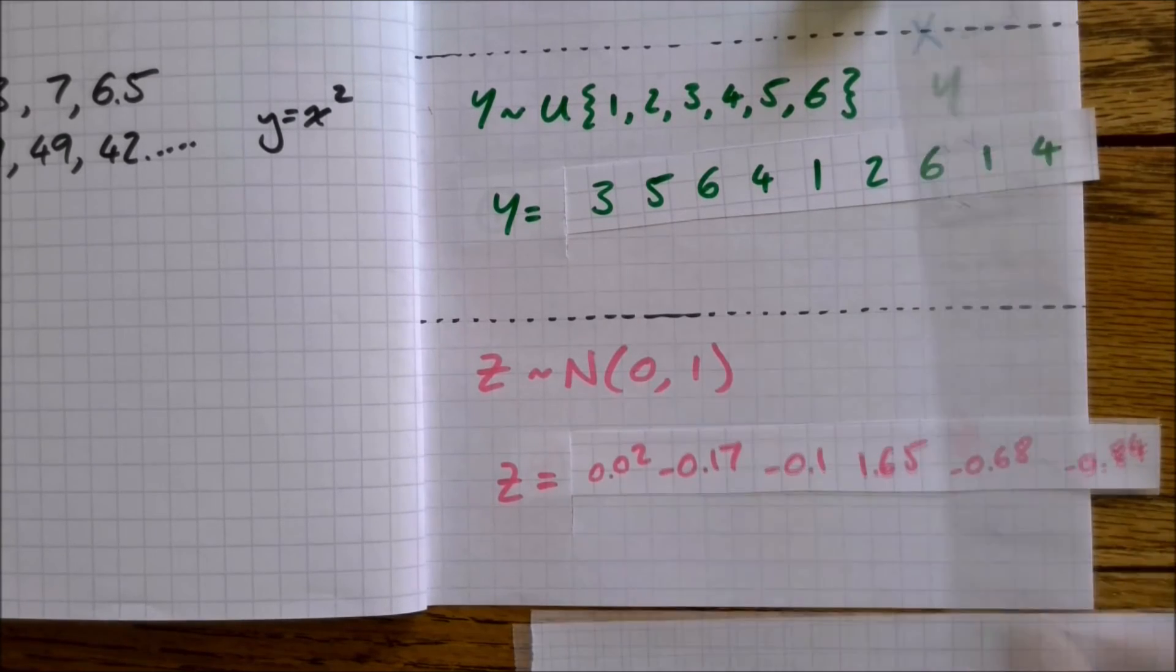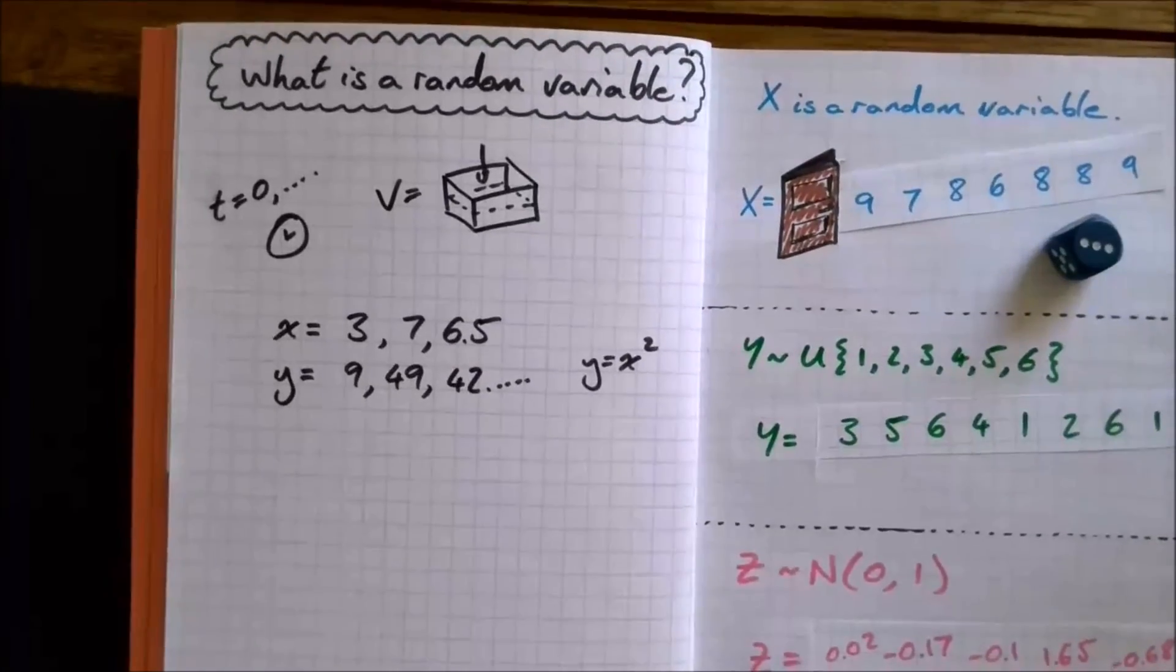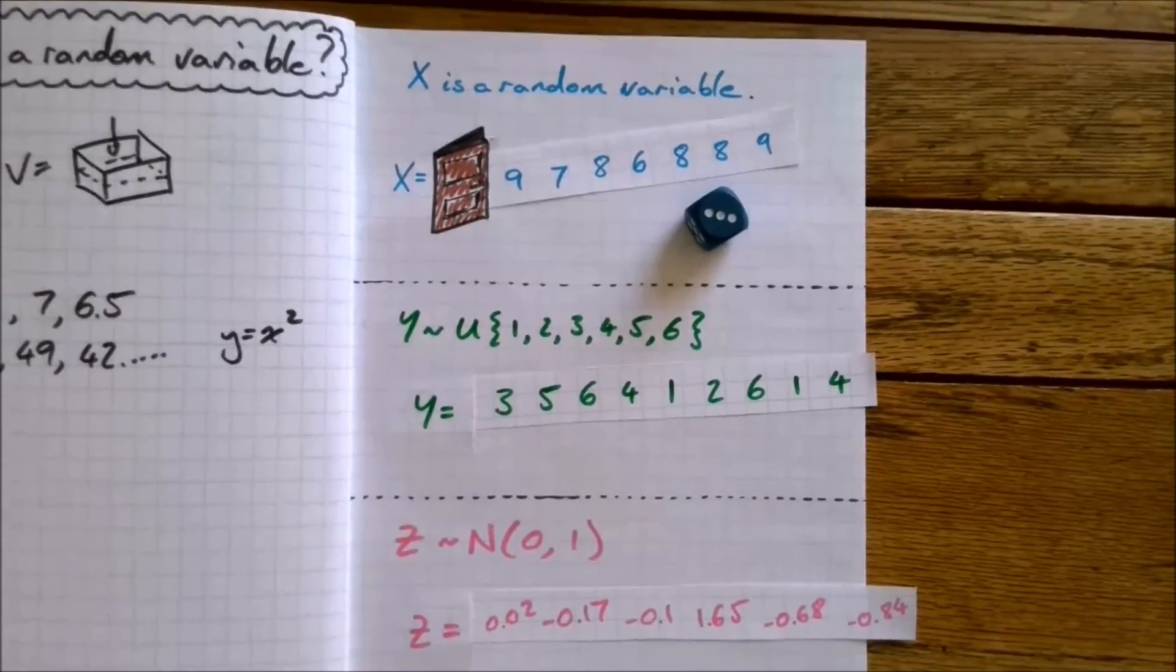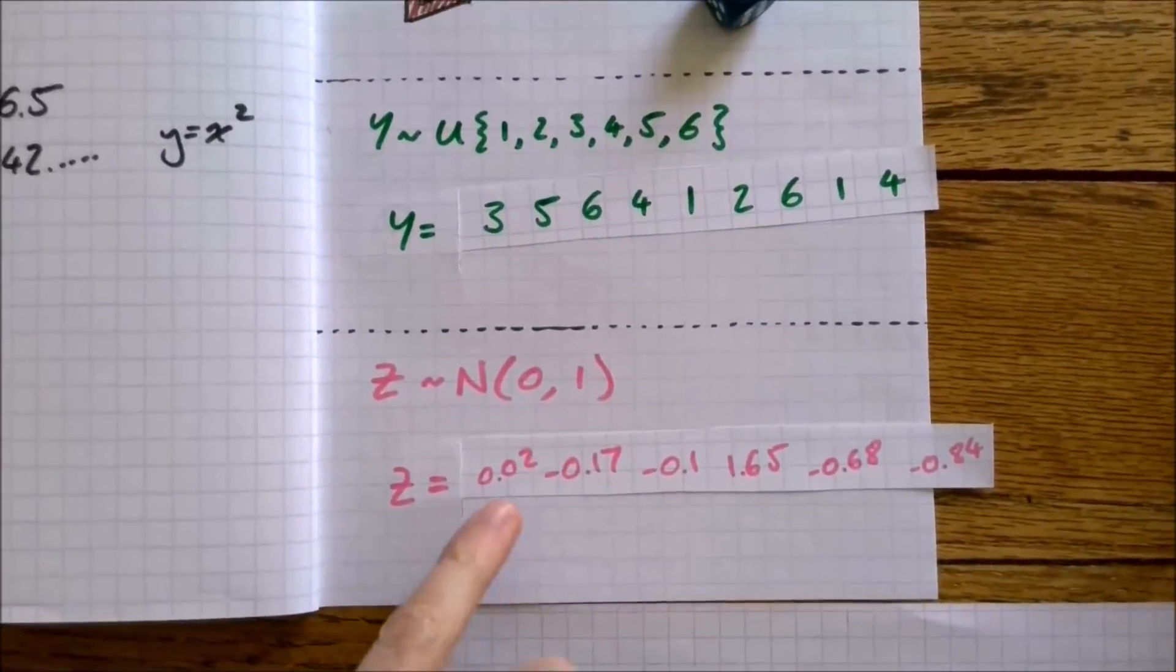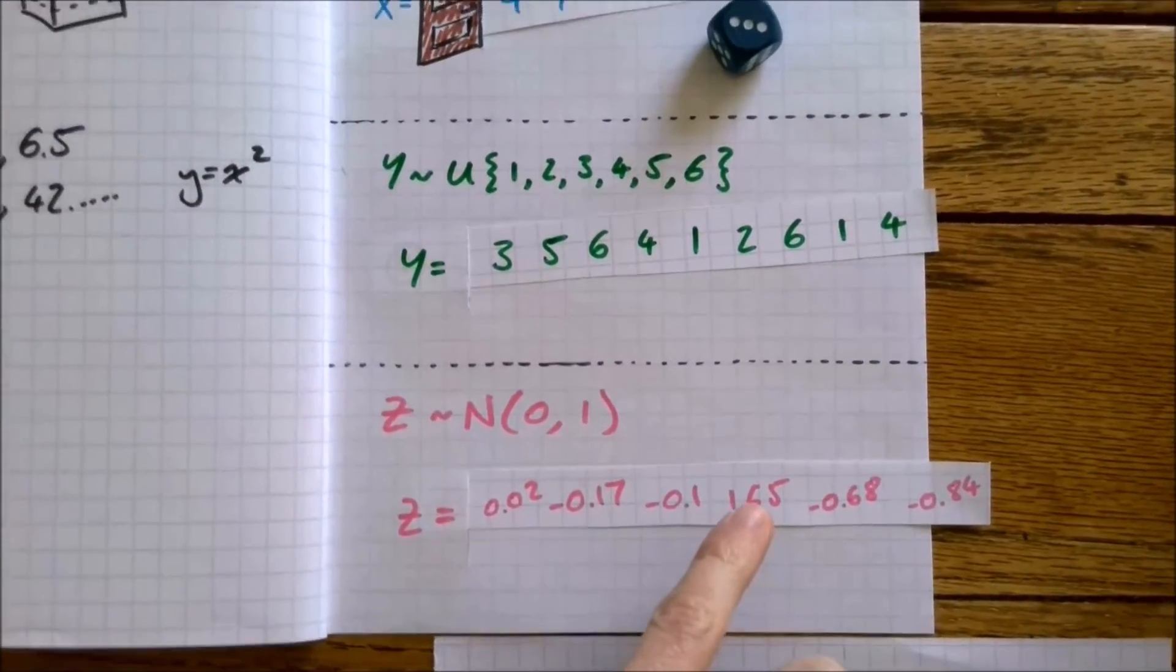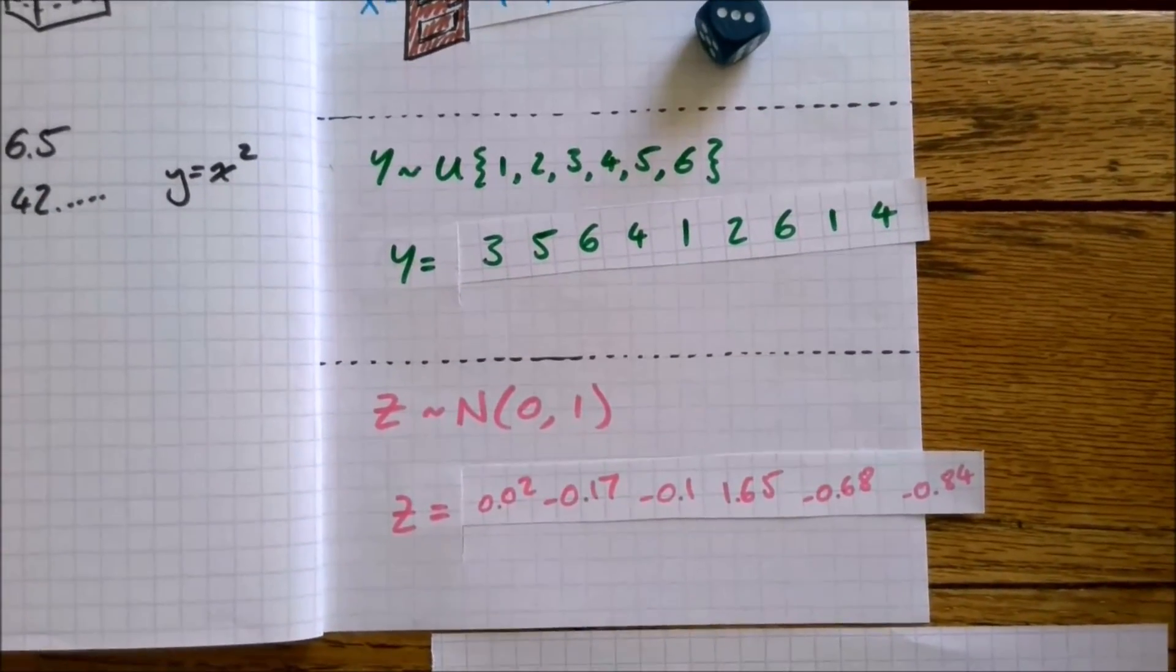To sum up, a variable is a value that can change. A random variable is a value that changes without our control, but we can still spot patterns in it. And over the next few lessons, we'll be spotting, or I'll be telling you, the patterns in normal random variables, like this one here.